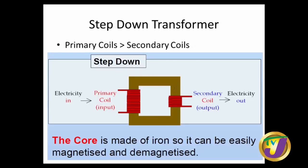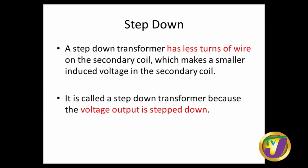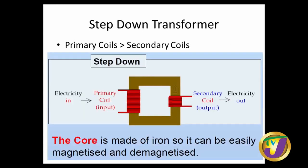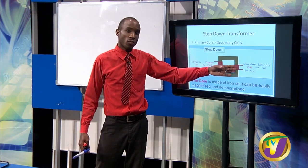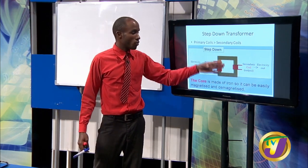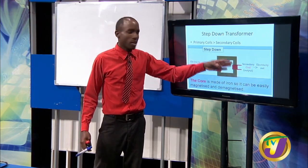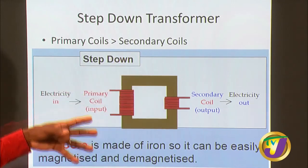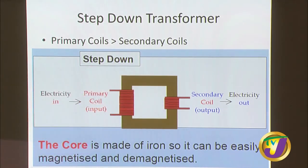The next type is step down — as the name suggests, it brings down the voltage. They are opposites. For the step down, you have fewer turns of wire on the secondary, which makes a smaller induced voltage. It is called a step down because the voltage output is stepped down. The number of coils on the primary is more than on the secondary, so whatever voltage is sent in, less comes out.